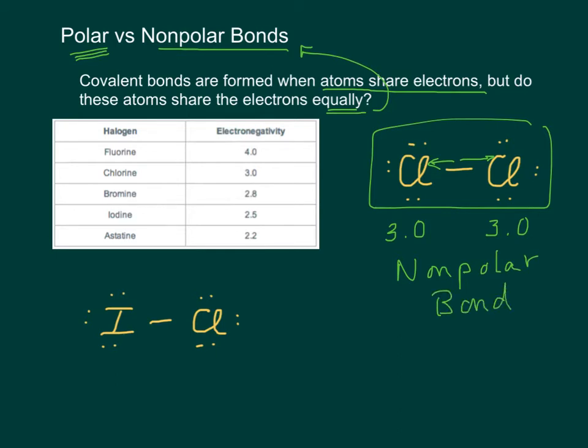But what happens when the electronegativities are different? Like iodine is 2.5 and chlorine is 3. Chlorine is pulling the electrons towards itself more strongly than iodine is able to, because chlorine is smaller. So the result is that these electrons in this bond get pulled closer to chlorine, and we end up with what's called a dipole or a polar bond.